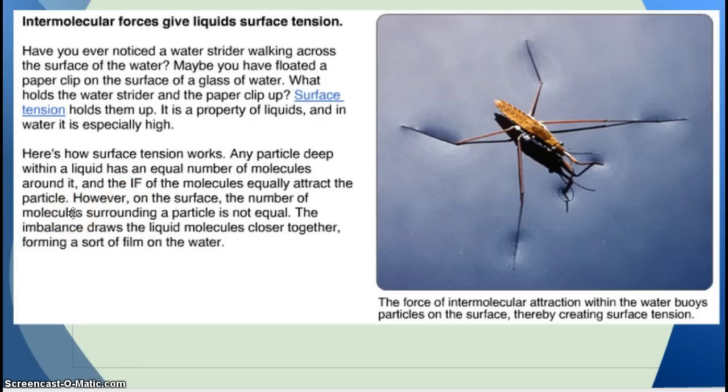However, when you're at the surface, the number of molecules surrounding a particle is not equal. This imbalance draws the liquid molecules closer together, forming a sort of film on the water. The water on top wants to be by the other water, wants to be by its family, and so it grabs on super tight, and that's how it makes almost like a skin on the top of the water.